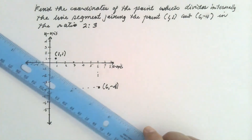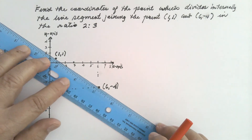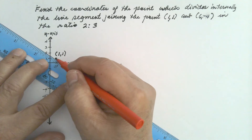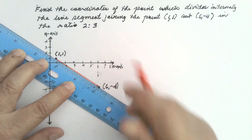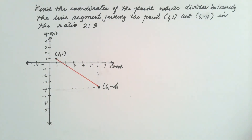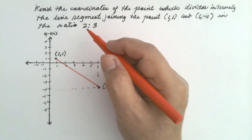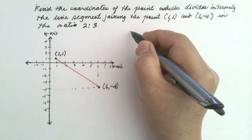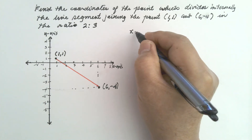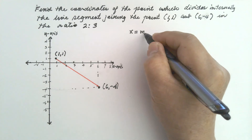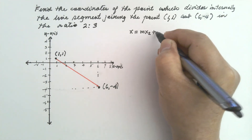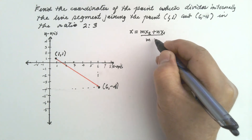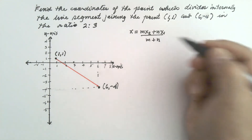Let us draw the line. So this is the line segment joining the two points. And we are asked to divide this internally in the ratio 2 is to 3. Use the formula for the x coordinate: x equals mx₂ plus nx₁ over m plus n.